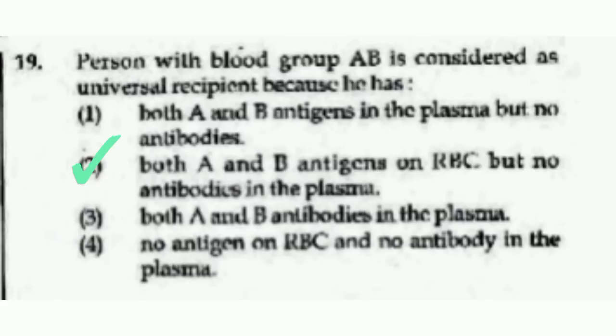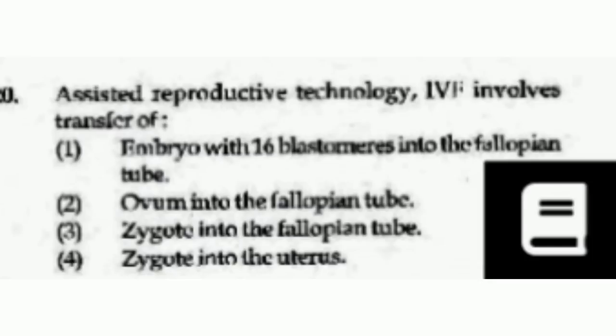Assisted reproductive technology IVF involves the transfer of — options are embryo with 16 blastomeres into the fallopian tube, ovum into the fallopian tube, zygote into the fallopian tube, or zygote into the uterus. The correct answer is option number 3, Zygote into the fallopian tube.